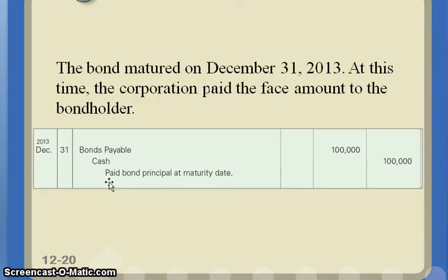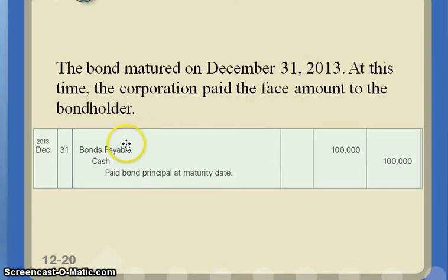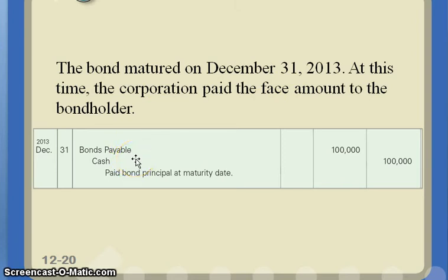When the bond matures on December 31st, 2013 — five years later — when I pay it back, the journal entry is a debit to bonds payable, reducing the liability, and a credit to cash for the $100,000 paid out. Not terribly complicated.